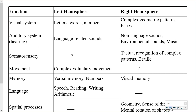We'll spend a little time talking about this table. Along the left-hand side are several different cerebrum functions, with differences between the left hemisphere and the right hemisphere. The first one is the visual system. Information coming in through your eyes travels to the brain, and even though the eyes are at the very front of your face, the primary visual area is in the occipital lobe.